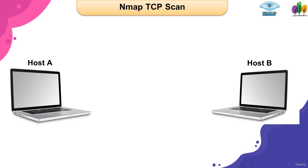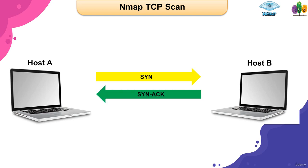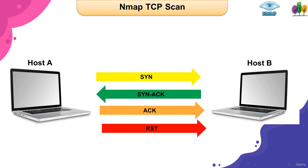NMAP sends a SYN packet to the target system, and the target system receives the packet and sends the SYN-ACK packet to the NMAP computer, which then sends the ACK packet to complete the connection. The destination system port sends the port information that is open. NMAP then terminates the connection by sending a reset packet immediately.